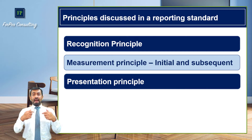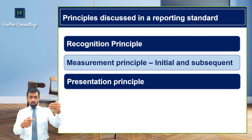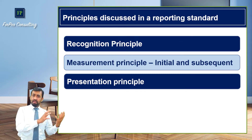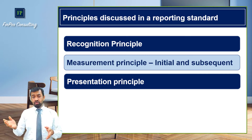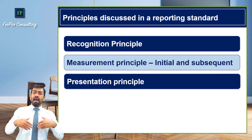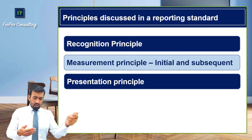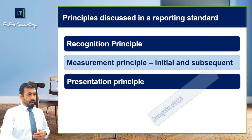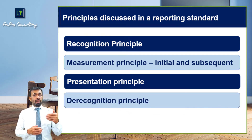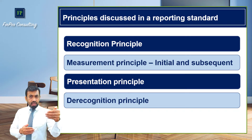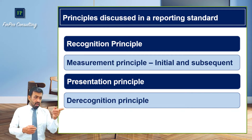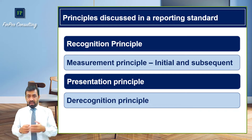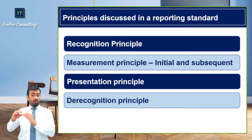The presentation principle tells us where a line item for that transaction will be presented in the financial statement — whether in the income statement, statement of profit and loss and other comprehensive income, or in the balance sheet or statement of financial position. The de-recognition principle is also key: just as there is a timing for introducing a line item into the financial statement, there is a timing to remove it. We call this the de-recognition principle — when to de-recognize any particular asset or liability.